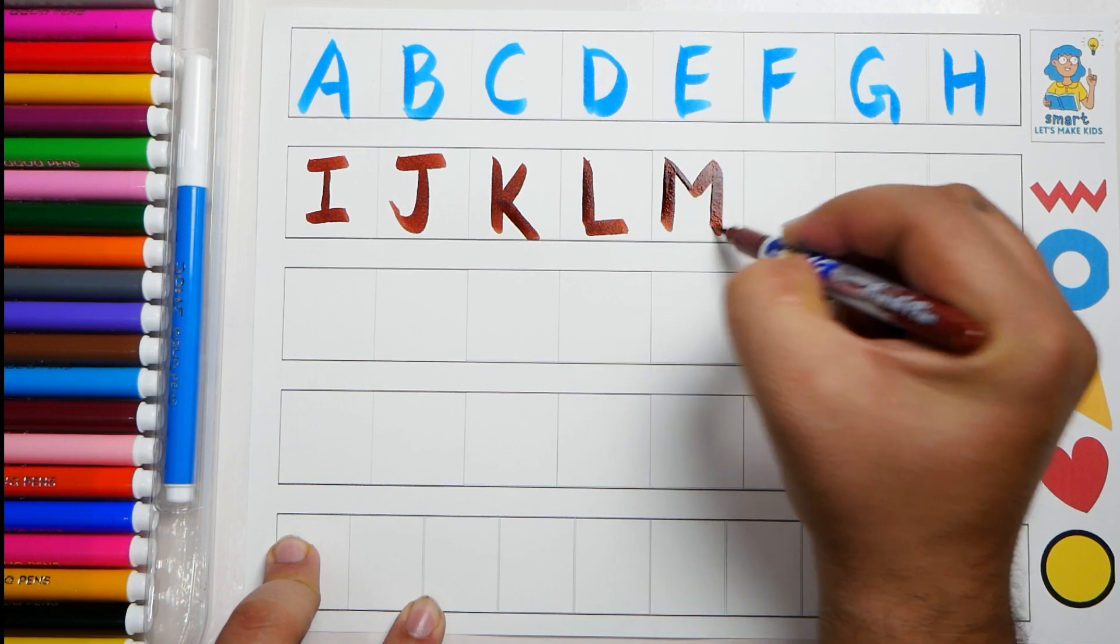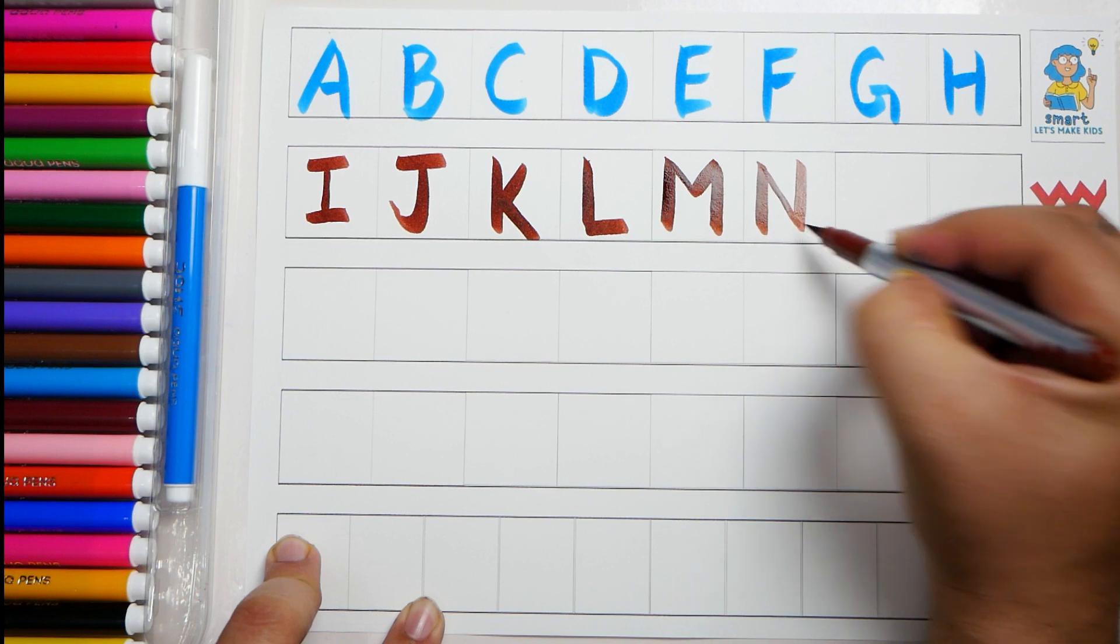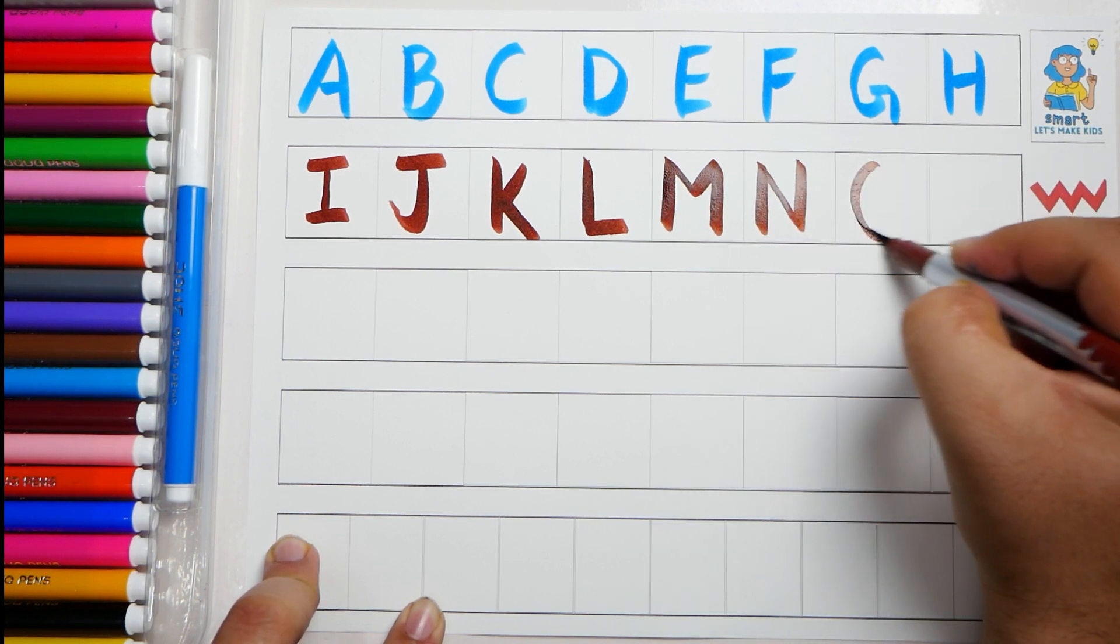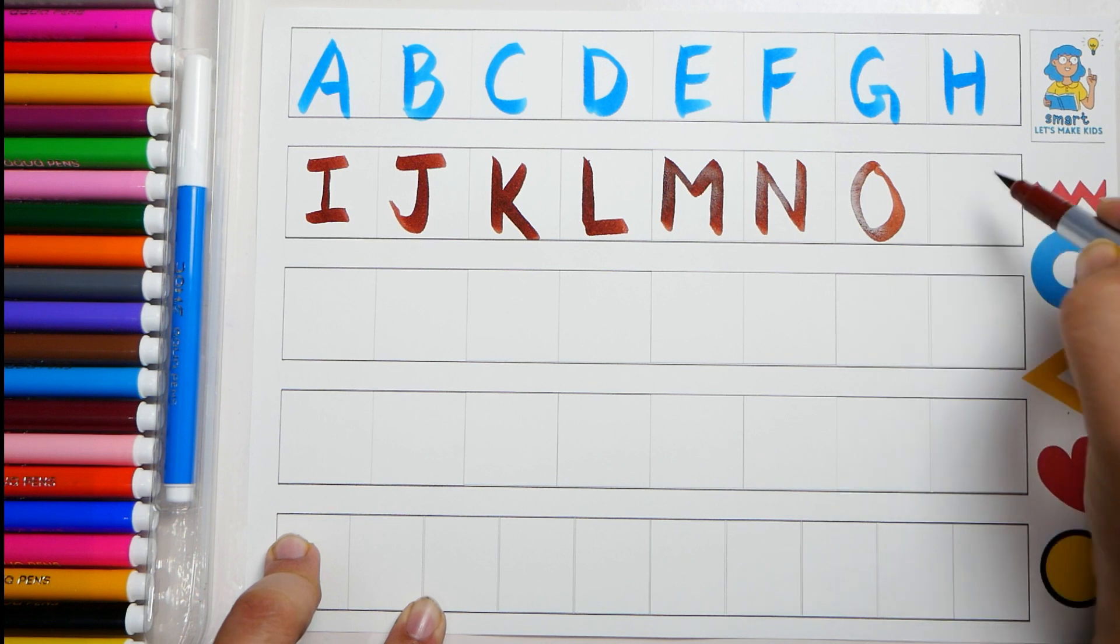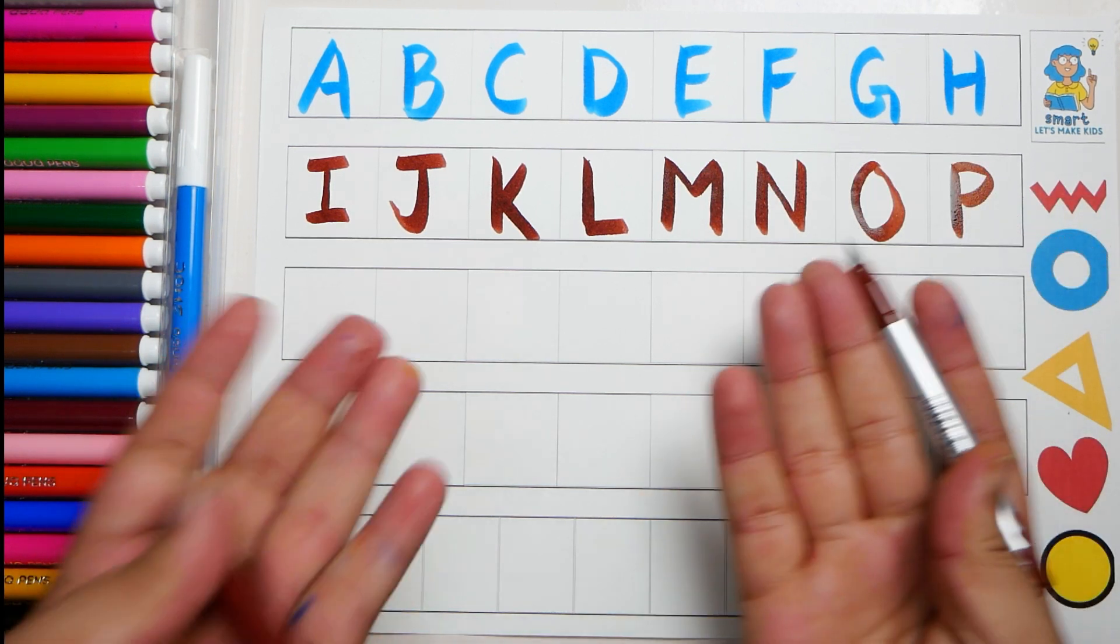M, M for monkey. N, N for nest. O, O for owl. P, P for peacock.